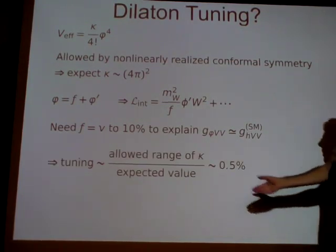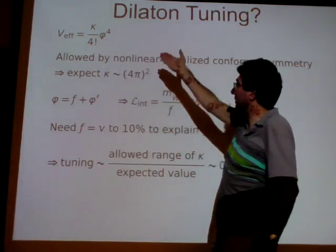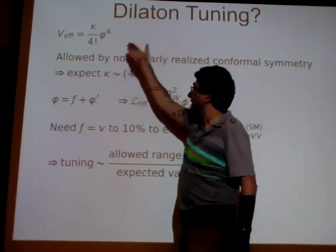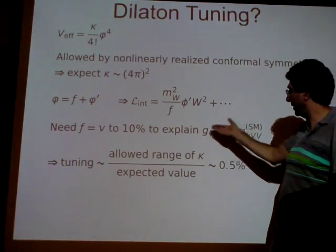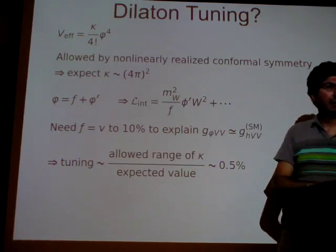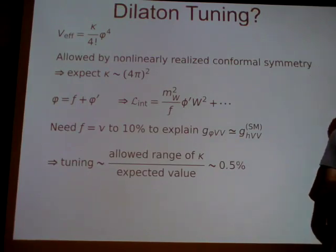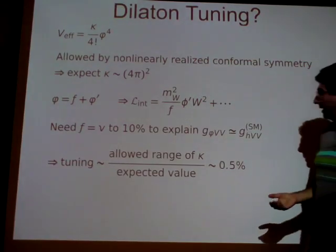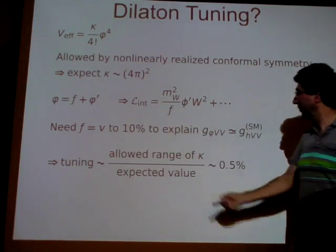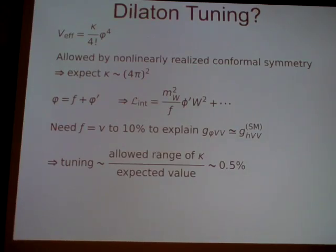However, a large κ means a small VEV. Because we've measured the mass of the state to be 125 GeV, if κ is large, the VEV will come out way too small — we'll get much too large a coupling. So there's some tuning or accident, and that's estimated by the allowed range of κ to get within 10%, divided by the expected value of 4π² — that's again less than a percent, about 0.5%.